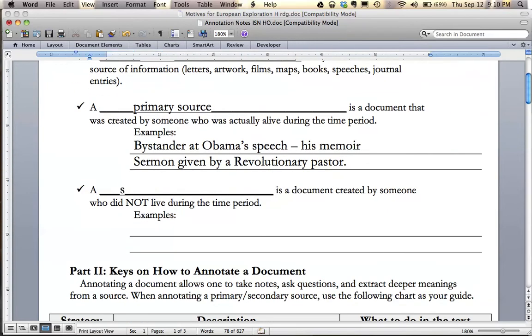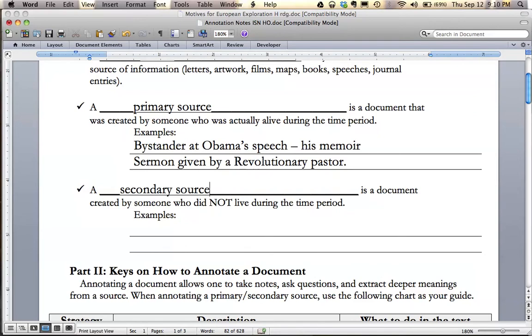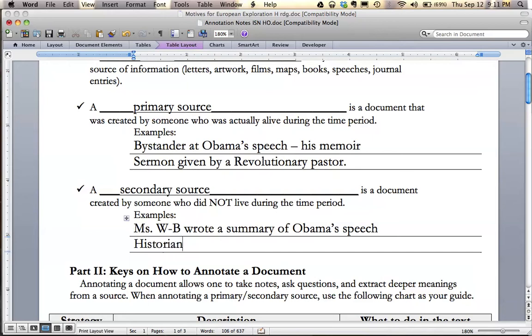So going on then, a secondary source, so we had primary, now we have secondary, is a document that's created by someone who did not live during the time period. So an example would be if Ms. Ward Bailey wrote a summary of Obama's speech. So I was not actually there. I'm just writing a summary. Maybe I read his memoir or I read the actual speech. I wasn't there. I'm writing a summary. So I am a secondary source. Another example would be a historian explaining the sermon given by a revolutionary pastor. So that's someone else, a secondary party, who is looking at usually primary sources and putting those together.